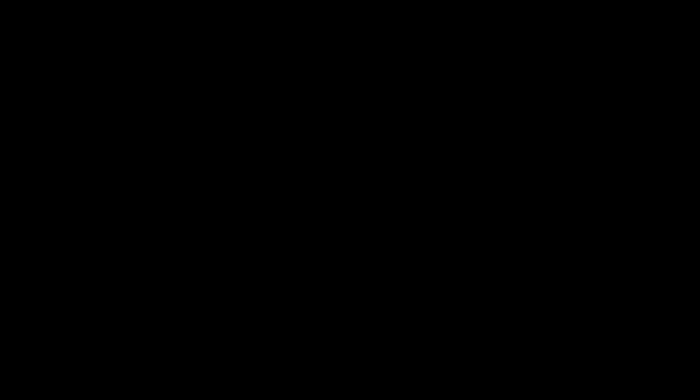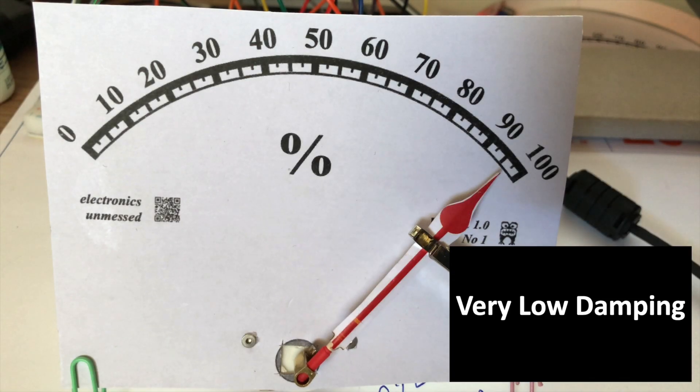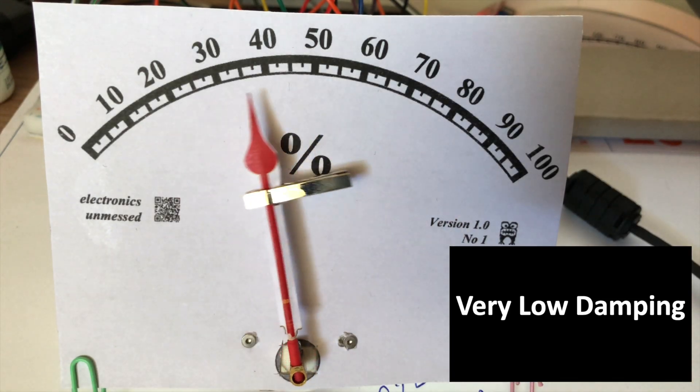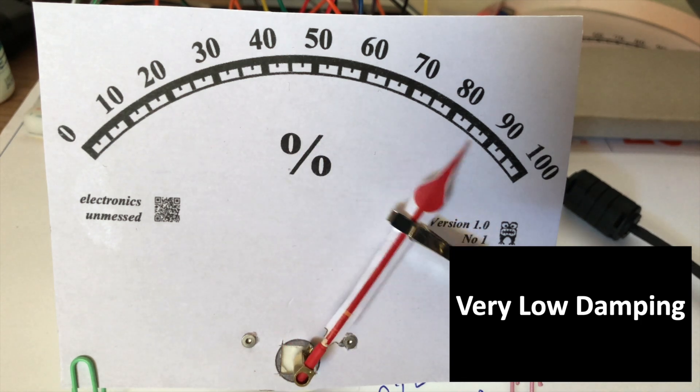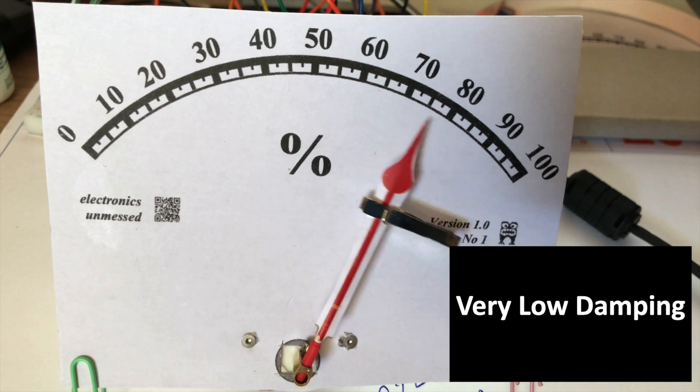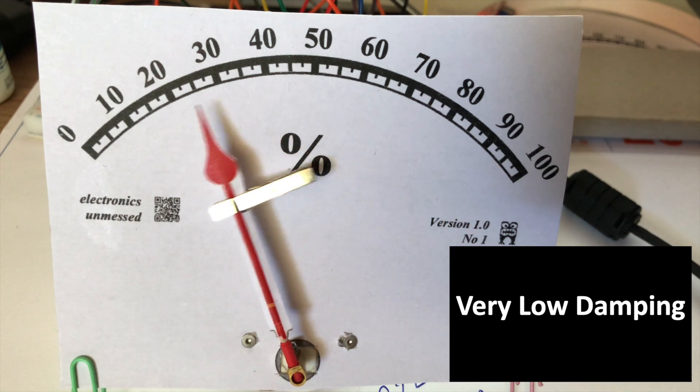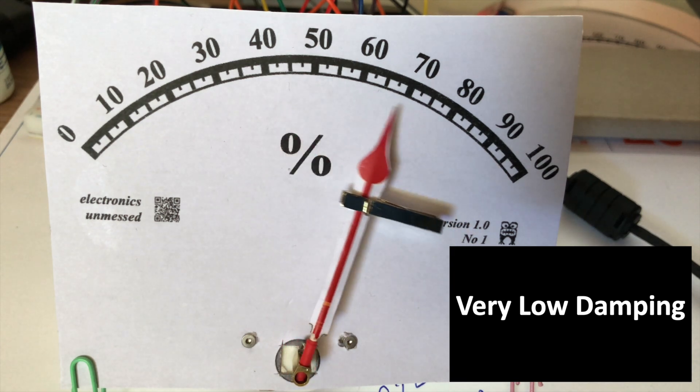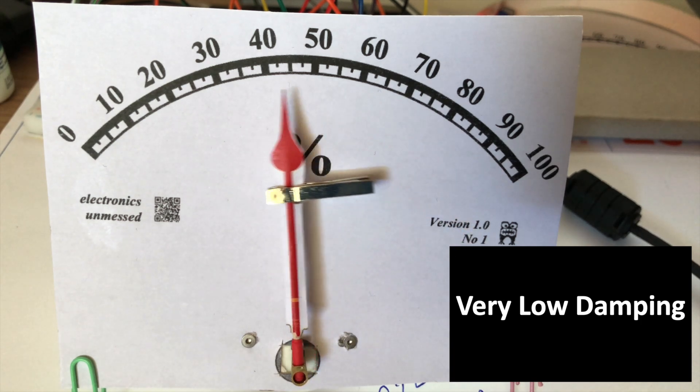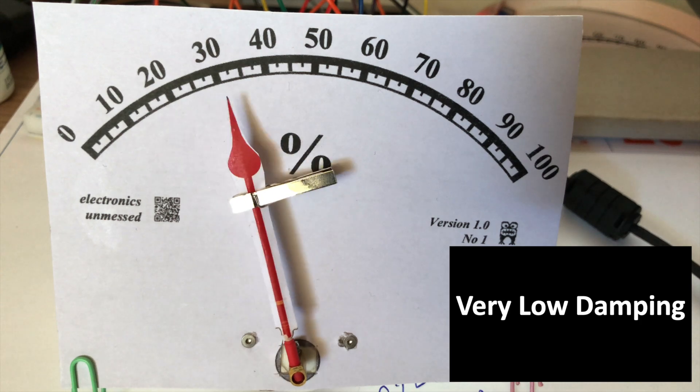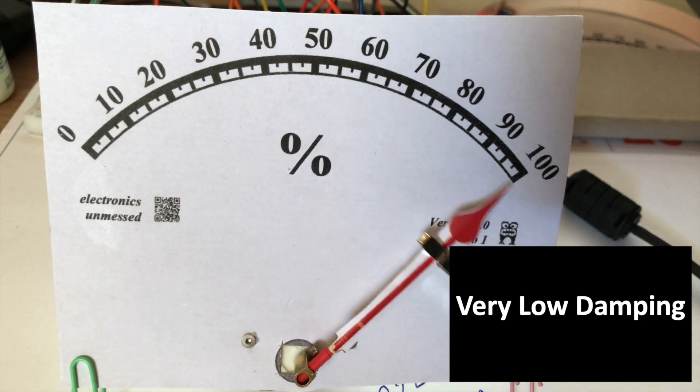However, before we put any effort into the realization, I would like to actually see the effect that is important to me. That's why I made a small test setup here, which gives us a first impression. For the following tests, I used a square wave signal that constantly jumps back and forth between two values. We now see how our Arduino controller works with different filter settings.